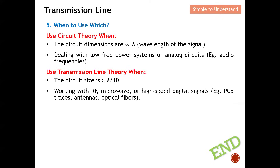When to use which theory: use circuit theory when the circuit dimensions are much smaller than the wavelength of the signal — you can apply Ohm's Law for circuit analysis, and this applies to low-frequency power systems or analog circuits such as audio frequency. Use transmission line theory when the circuit size is large compared to λ/10. Typically, this environment involves RF, microwave, or high-speed digital signals. That concludes this video — I compared circuit theory with transmission line theory. Thank you so much and I hope to see you soon.